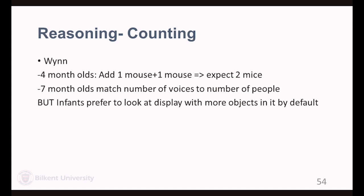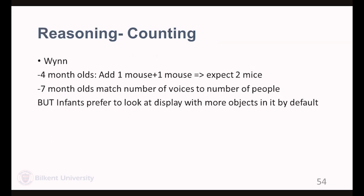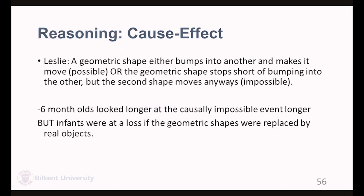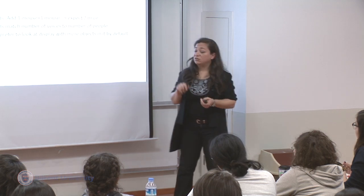Reasoning and counting: Wynn has many experiments looking at children's early number sense. At four months, her studies show that if one mouse goes behind a screen and a hand adds another mouse, there should be two mice when you lower the screen. The impossible event is when you add one, then another, but still have only one. She found that four-month-olds are startled by this impossible arithmetic result. However, there's a lot of debate, and it's worth noting that up to three objects, we seem sensitive — but so are intelligent apes.